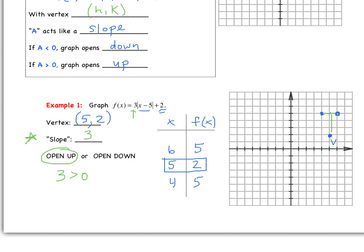We can use our A value again, counting up 3 and to the right 1 from (6, 5), and up 3 and to the left 1 from (4, 5), giving us points (7, 8) and (3, 8). Now we've got our points, we draw in the absolute value function, and we're done.